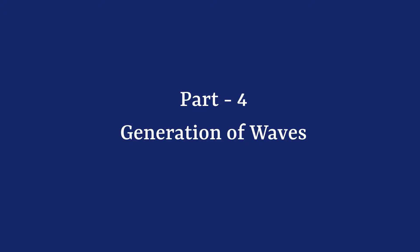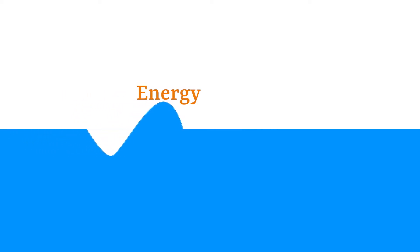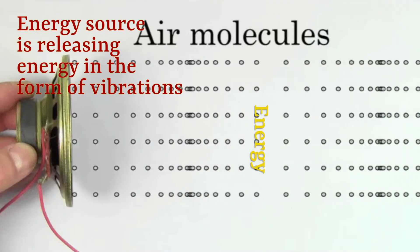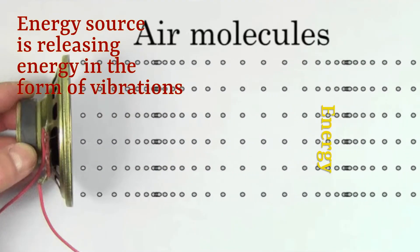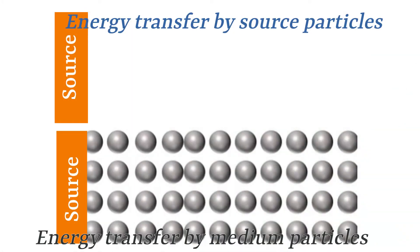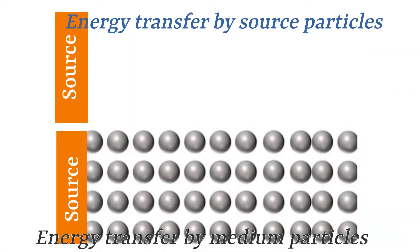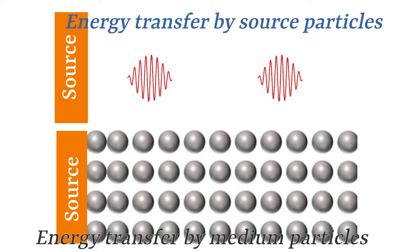Part 4: How is a wave generated? We have established that a wave is a traveling form of energy. A wave is generated when our energy source releases the energy. This energy can be passed from one place to another by medium particles or carried by particles emitted by the source itself.